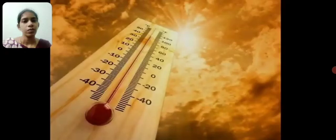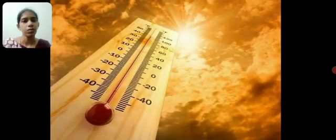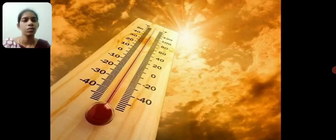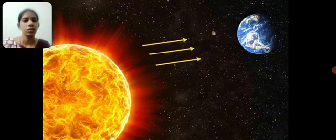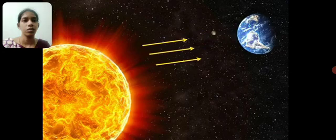In conduction and convection, there is a medium in which heat gets transferred. But there is no medium between sun and earth, still we get heat from it. When heat transfer takes place without any medium, it is called radiation.